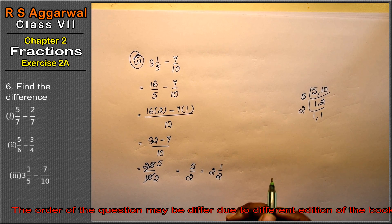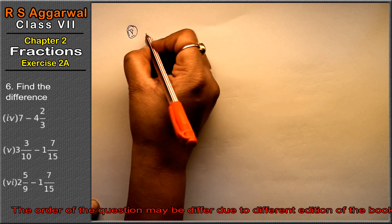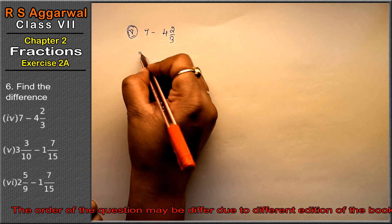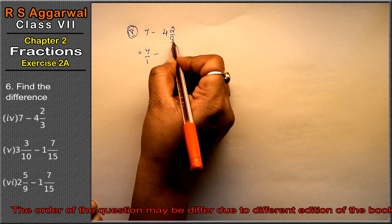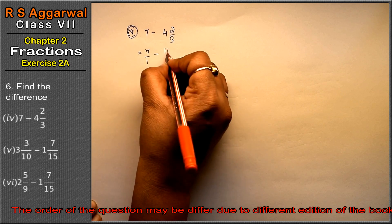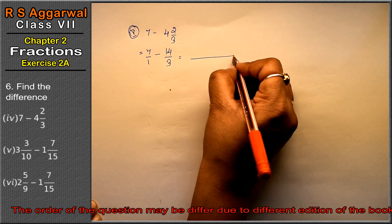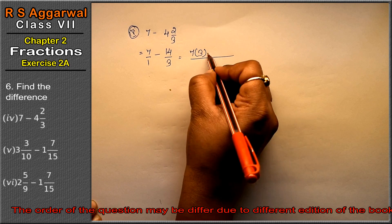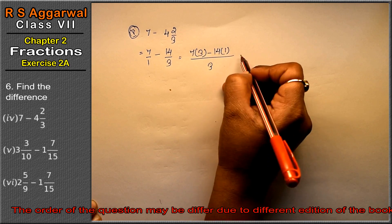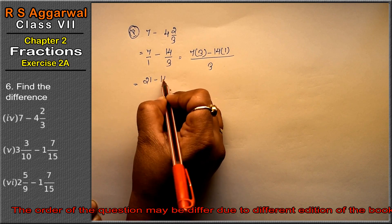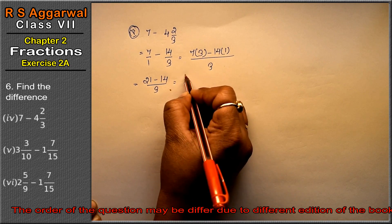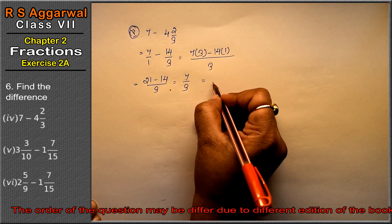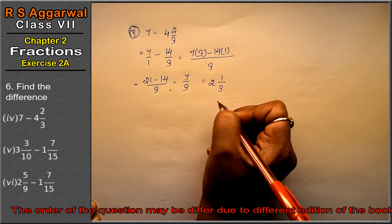Let's do the fourth part. Fourth part is 7 minus 4 and 2 upon 3. First, there is nothing below 7. Convert the mixed fraction: 3 fours are 12, plus 2 is 14 upon 3. LCM is 3. So 7 into 3 is 21, minus 14 upon 3. That gives 7 upon 3. Since the numerator is larger, we convert to mixed fraction: 3 twos are 6, plus 1, so 2 and 1 upon 3 is the answer.